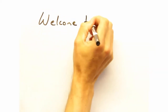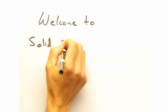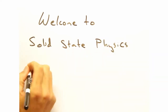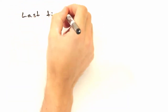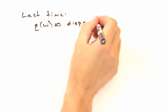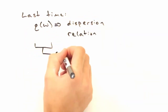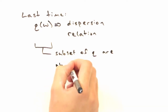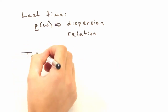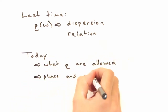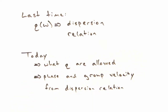Hello everyone, and welcome back to Solid State Physics in a Nutshell, brought to you by the Physics Department at the Colorado School of Mines. My name is Eric. And I'm Nicole. Last time we developed a relation between our wave vector q and the frequency of oscillations in a solid called the dispersion relation. Although we plotted omega over all values of q, only certain values of q will result in something physically reasonable. Today we're going to look at what those values are and how to get phase and group velocity information from our dispersion relation.